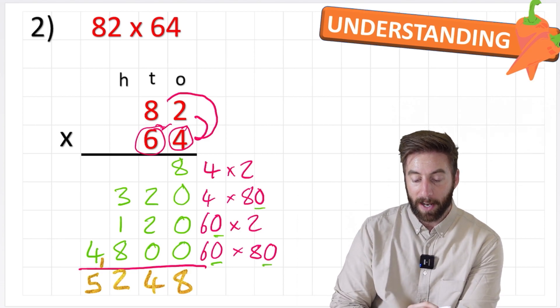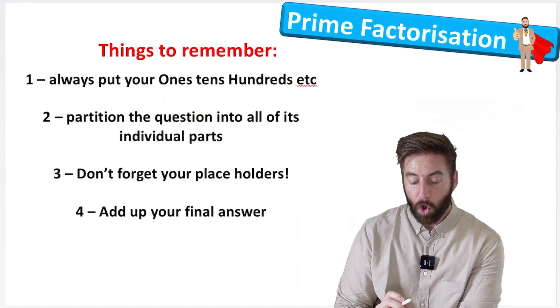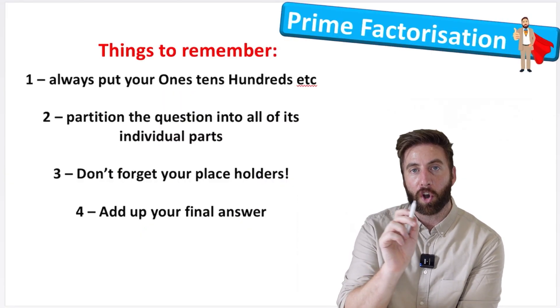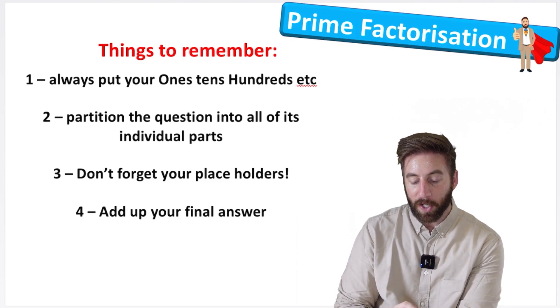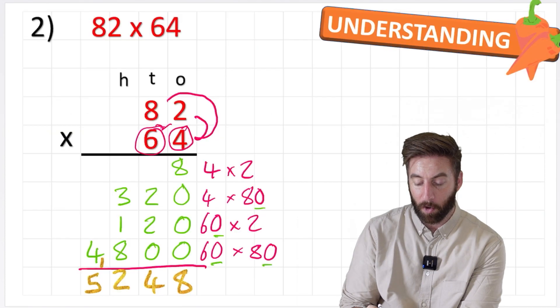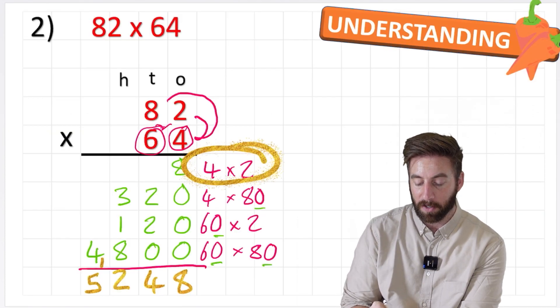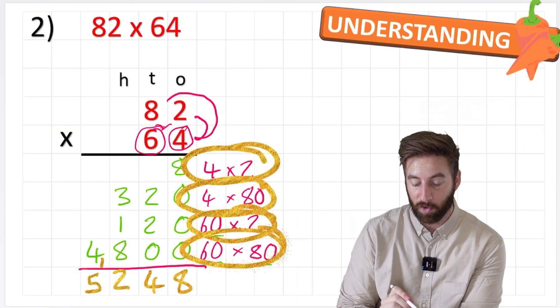That's going to show you got a good understanding. Let's think about the things we need to remember. Always put your 1s, 10s and 100s as your column titles. That's going to help you avoid any mistakes. Partition the question into all of its individual parts like we did here where we thought about our four questions first. 1, 2, 3, 4. That's really important.